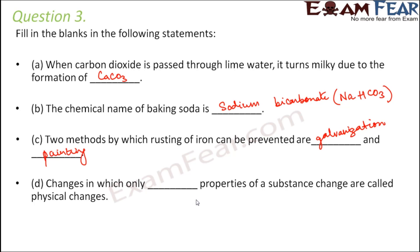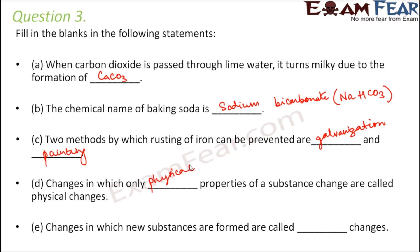Changes in which only the physical properties of a substance change are called physical changes. Physical properties are those which can be seen, observed, and measured. Changes in which new substances with new chemical composition are formed are called chemical changes.